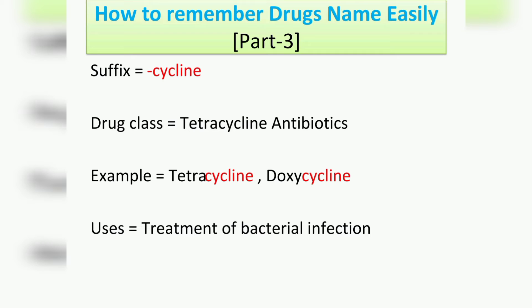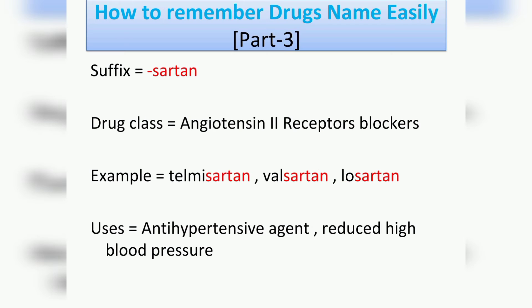The next suffix is '-cycline', which represents the drug class tetracycline antibiotics. Examples include tetracycline and doxycycline, and their use is the treatment of bacterial infections.